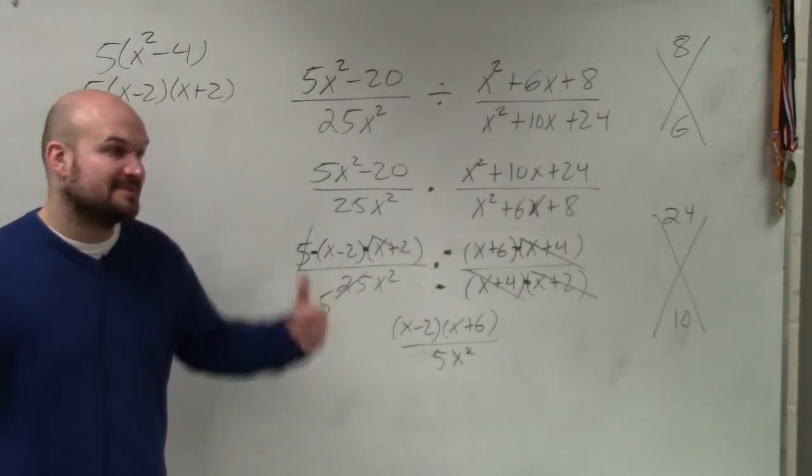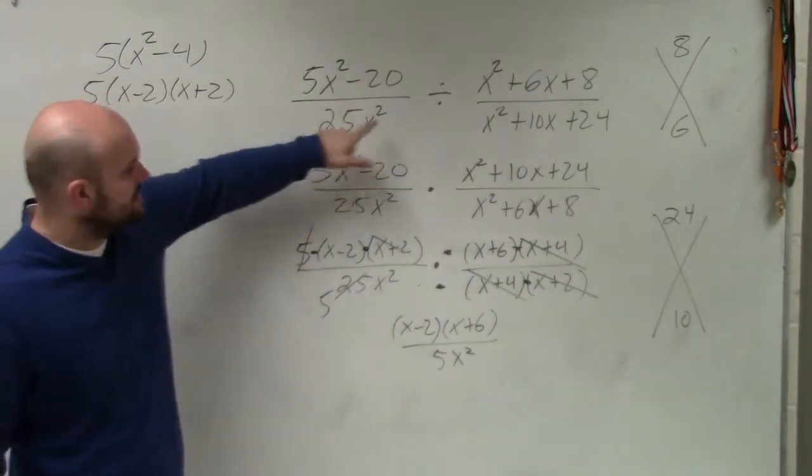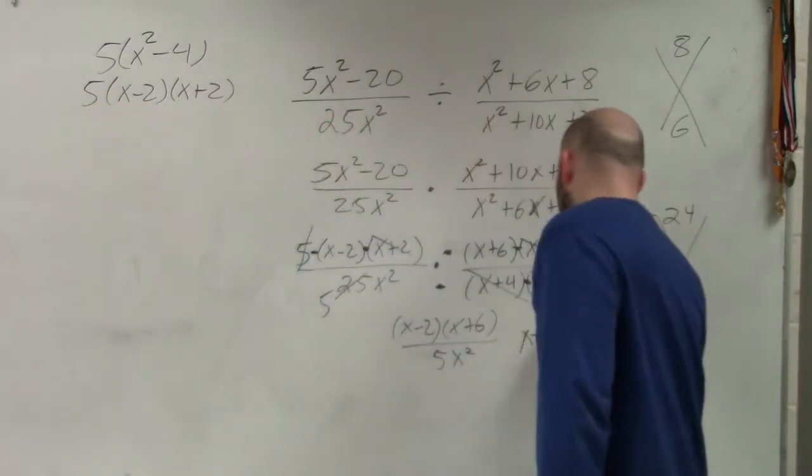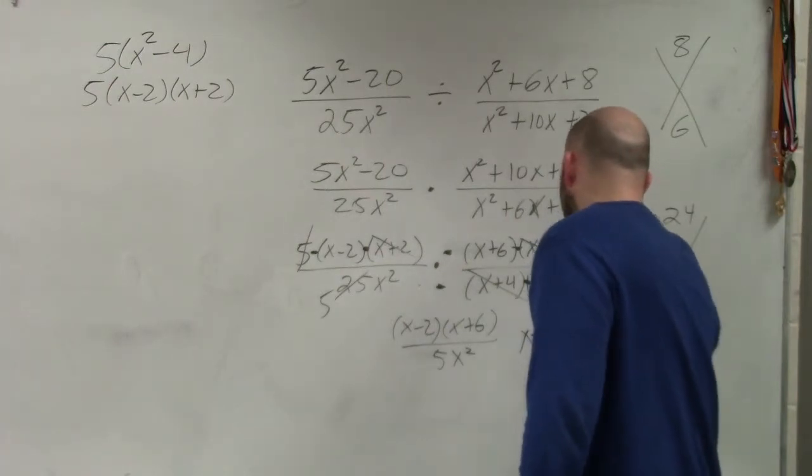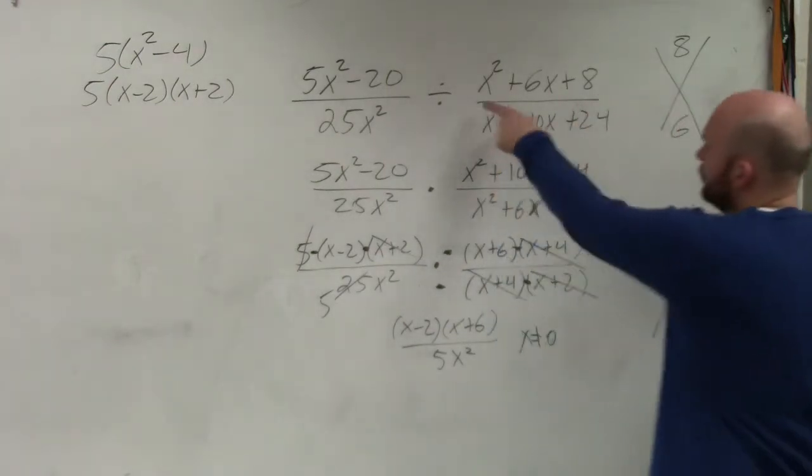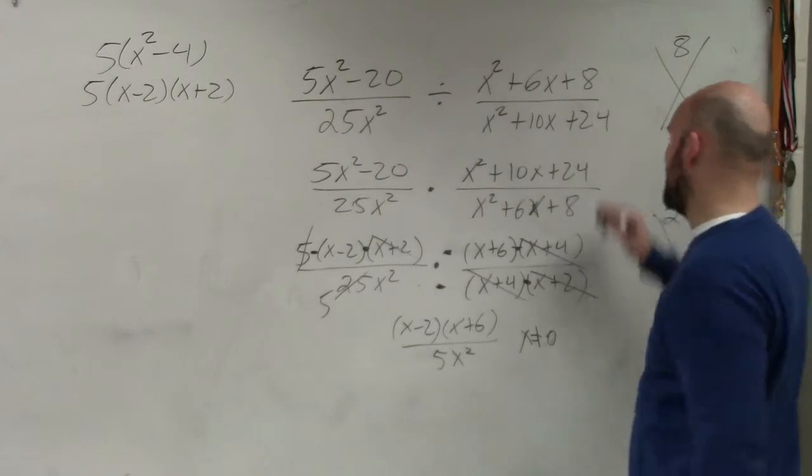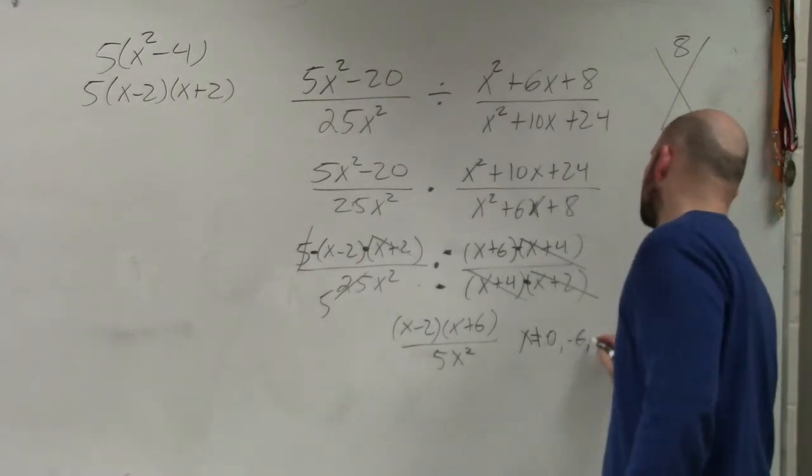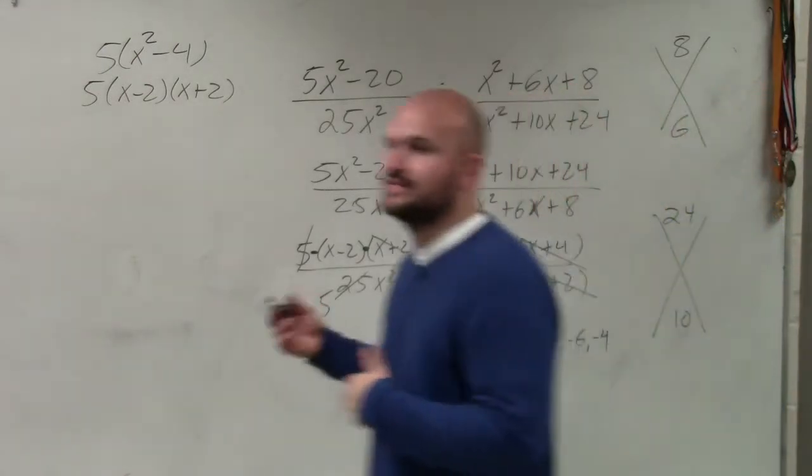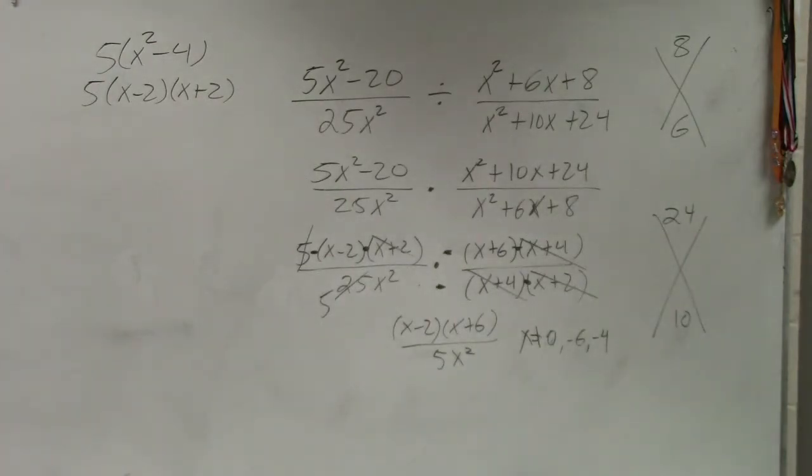And then again, I go back to my original problem and say, what can my constraints be? What can x not equal? Well, x cannot equal 0. And then I go back to my original denominators, where x cannot equal -6 and -4, because those were the denominators of the original problem. OK?